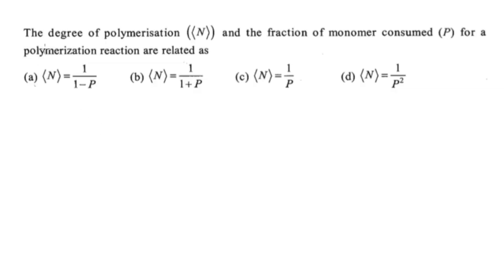We will talk about this question which was asked for two marks in the CSE June 2019 exam. It asks that the degree of polymerization, given by N, and the fraction of monomer consumed, given by P, for a polymerization reaction are related as — so how are these two things related?